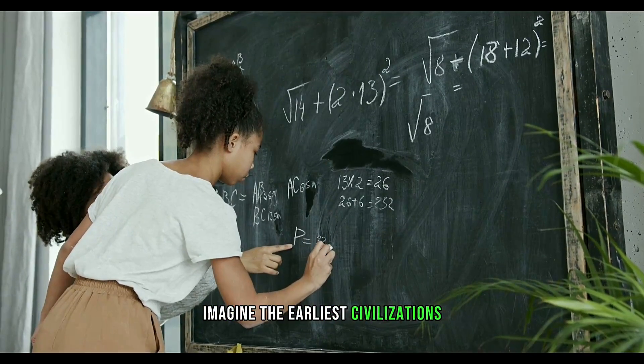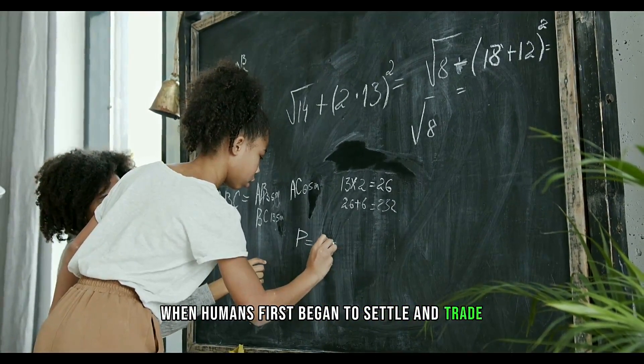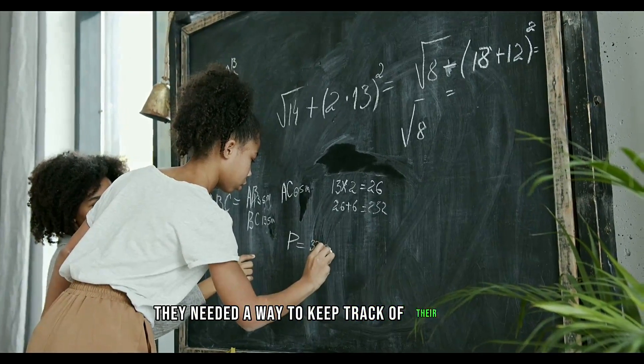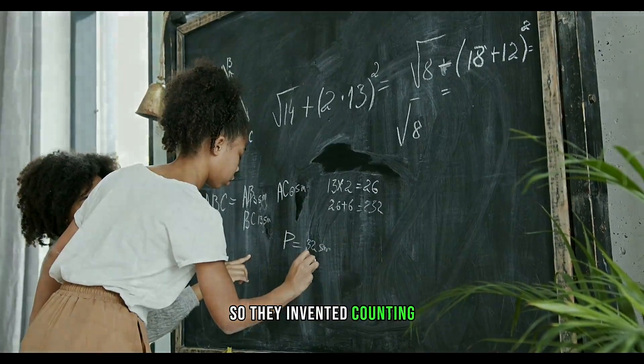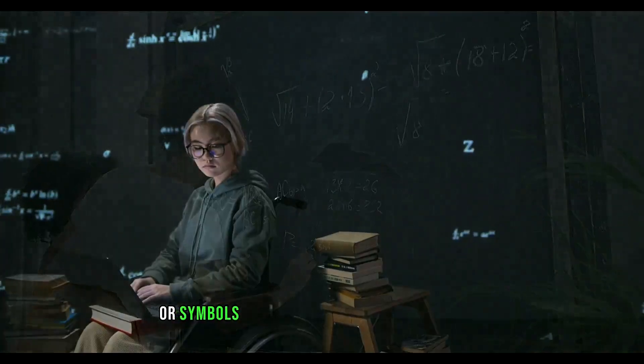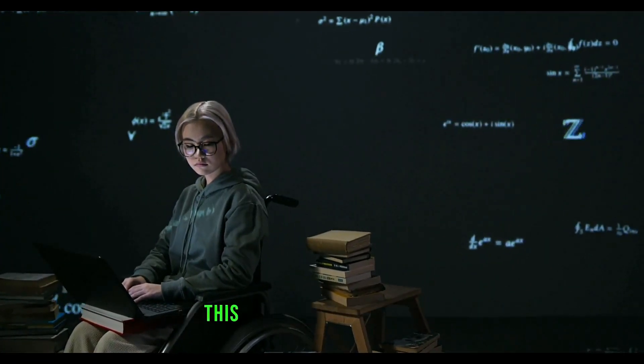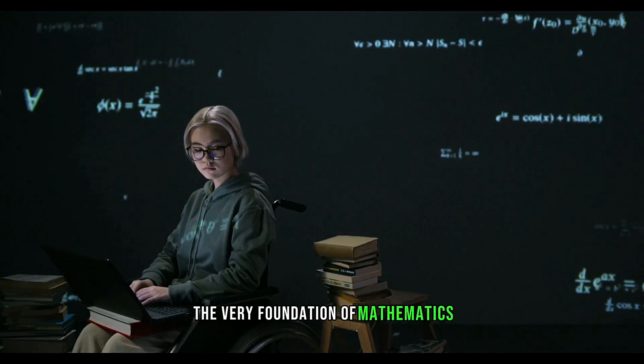Imagine the earliest civilizations when humans first began to settle and trade. They needed a way to keep track of their goods, so they invented counting. They used tally marks or symbols to represent different quantities. This was the birth of arithmetic, the very foundation of mathematics.